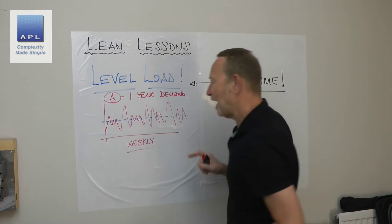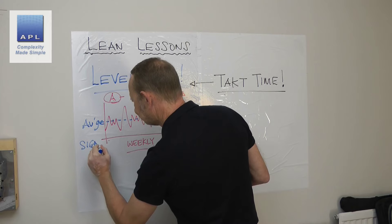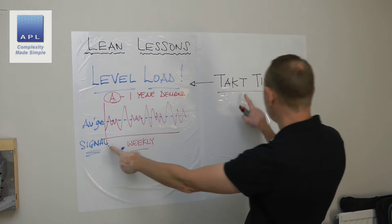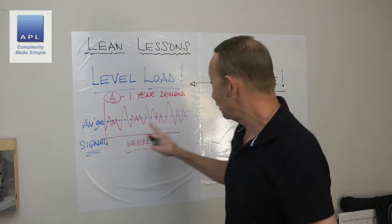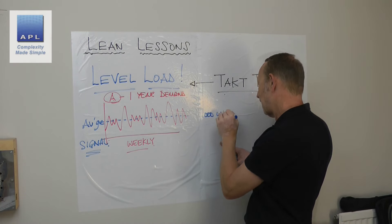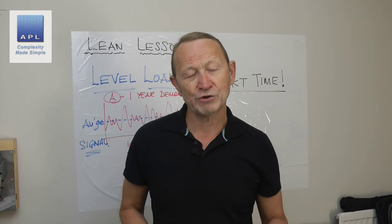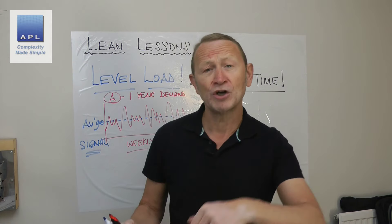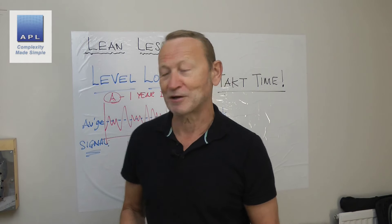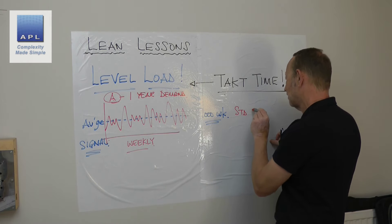You look through the data and you work out the average — commonly known in a data set as the signal. Your market is sending you a signal: how much do they want? You work out the average. Let's say on average over the last 12 months they took 1,000 a week. What forecast do you put into your systems? What do you tell your supply chain, your purchasing system? This is standard work — there is a standard demand quantity: 1,000 per week.